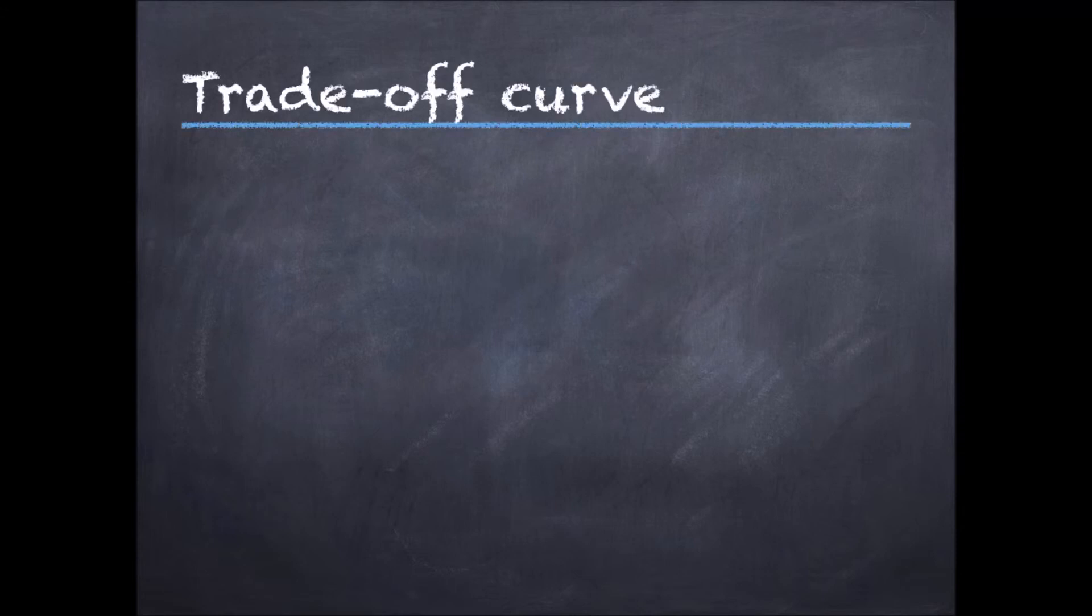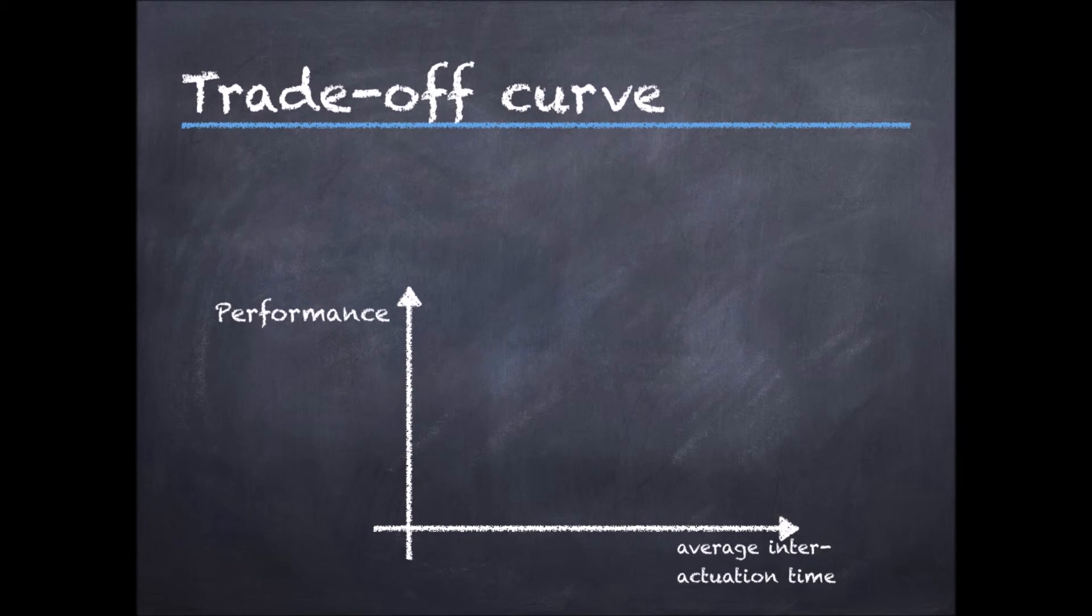So far, I have been claiming that event-triggered control is somewhat better than periodic control. But how can we formalize this? We can use a trade-off curve. On one axis, we write the average interaction time, and on the other axis, a measure of performance, which by convention we want to minimize.